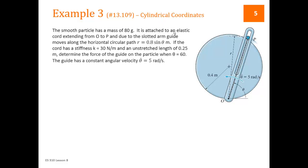Our third example is the cylindrical coordinates example. In this case we're given information about theta and theta dot, and that's how we know we need to use cylindrical coordinates, because we use cylindrical coordinates when we're given information about a change in angular velocity or acceleration.